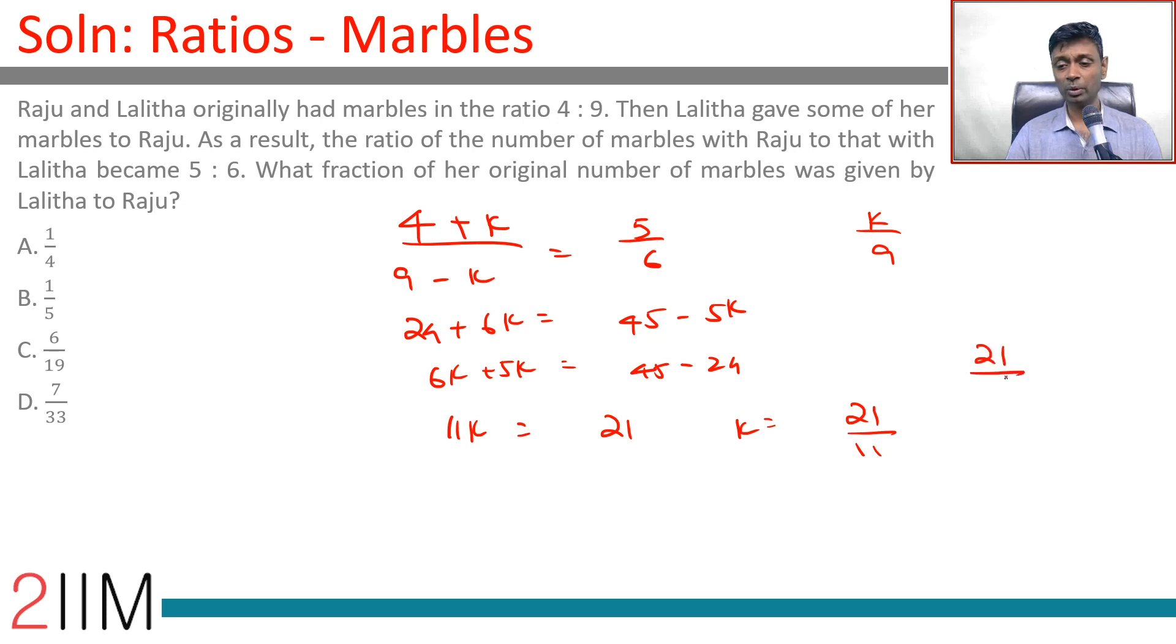What we need to find is 21 by 11 times 1 by 9, which is 21 by 99. Simplifying by dividing by 3: we get 7 by 33, which luckily enough is found here.